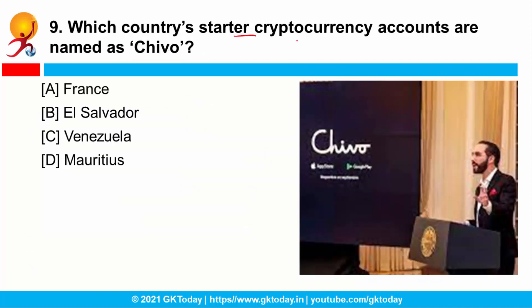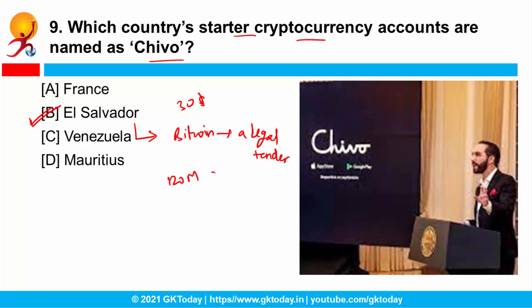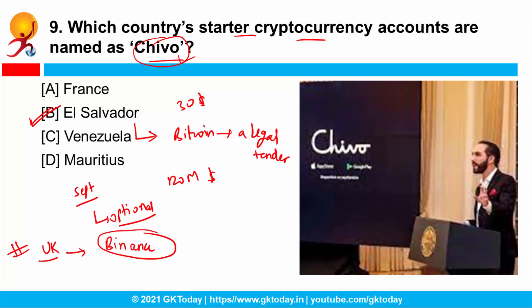Question number 9: which country's starter cryptocurrency accounts are named Chivo? El Salvador has announced plans to give out starter cryptocurrency accounts with $30 to promote Bitcoin use. El Salvador is the first country to make Bitcoin a legal tender. The government will allocate $120 million to establish 4 million starter Bitcoin wallets named Chivo. When the law takes effect in September, accepting Bitcoin will be optional, not mandatory. Note that the United Kingdom has recently banned the world's largest cryptocurrency exchanges, and the capital of El Salvador is San Salvador.